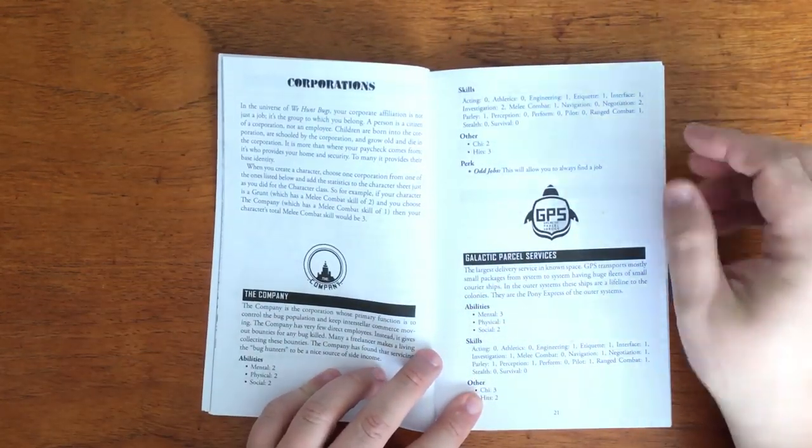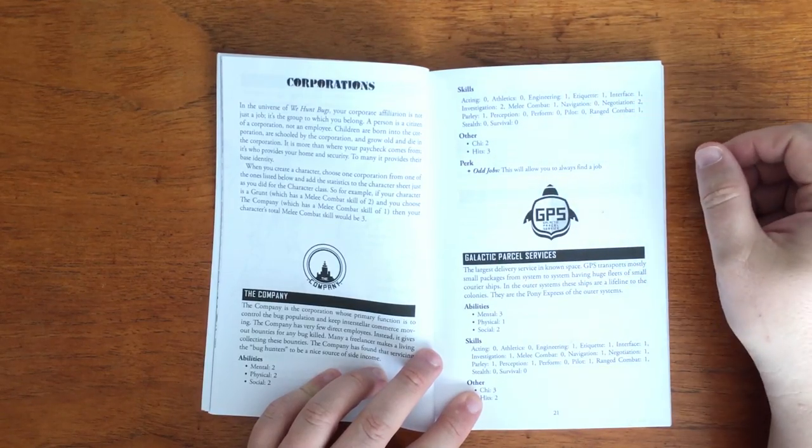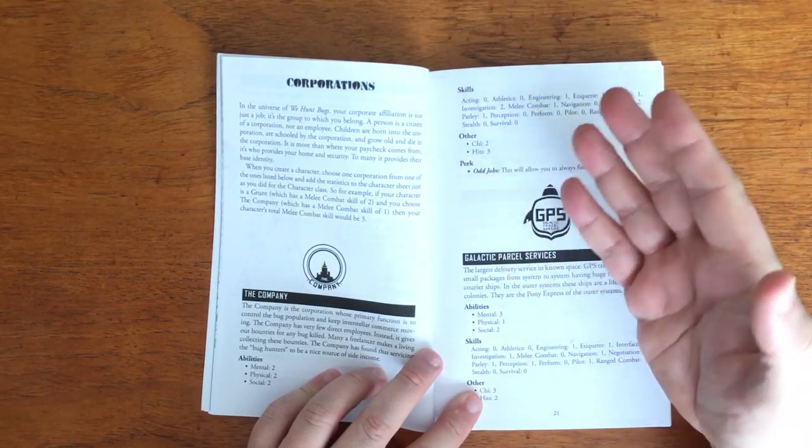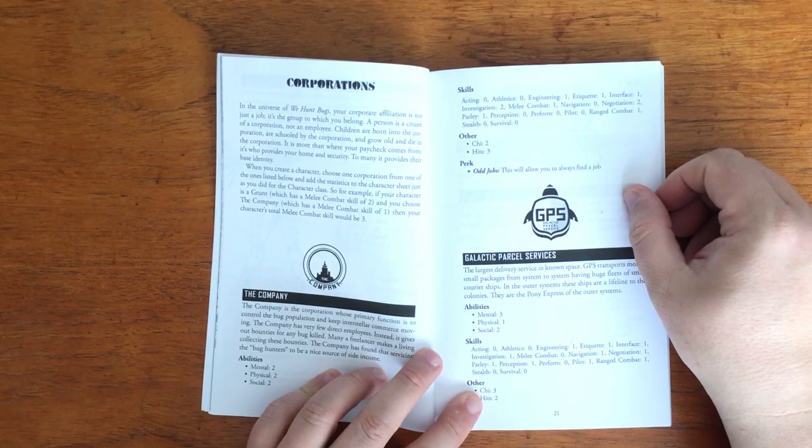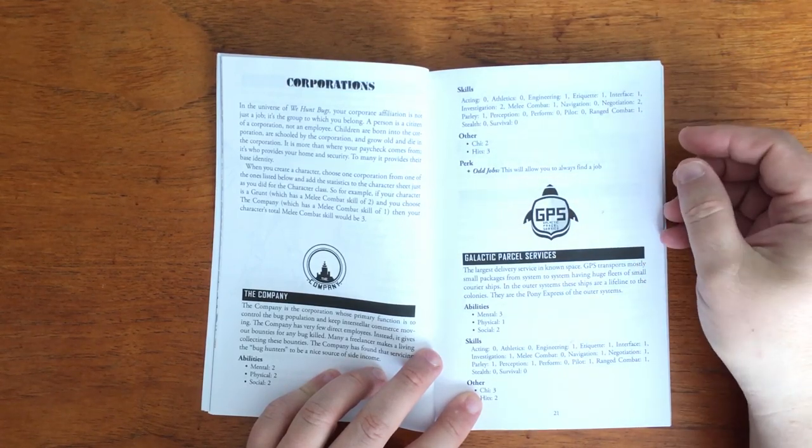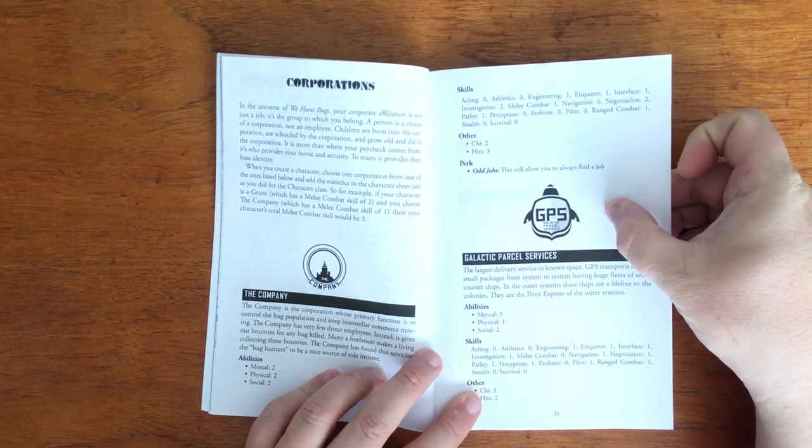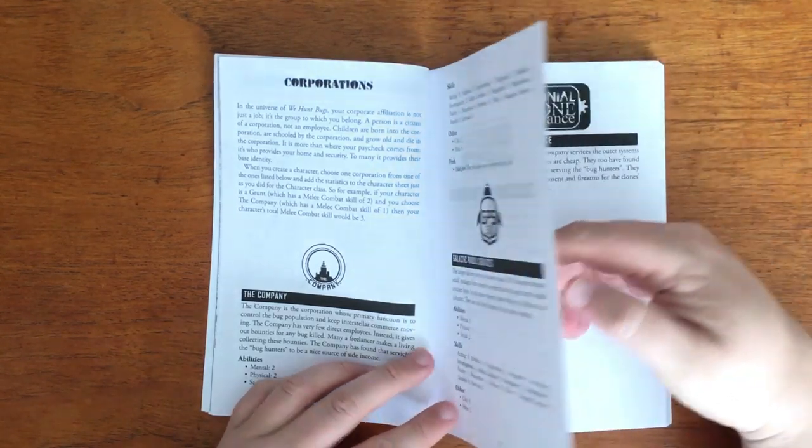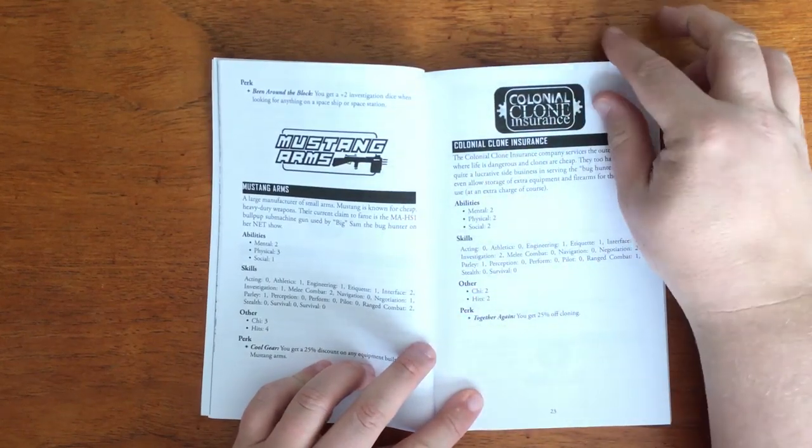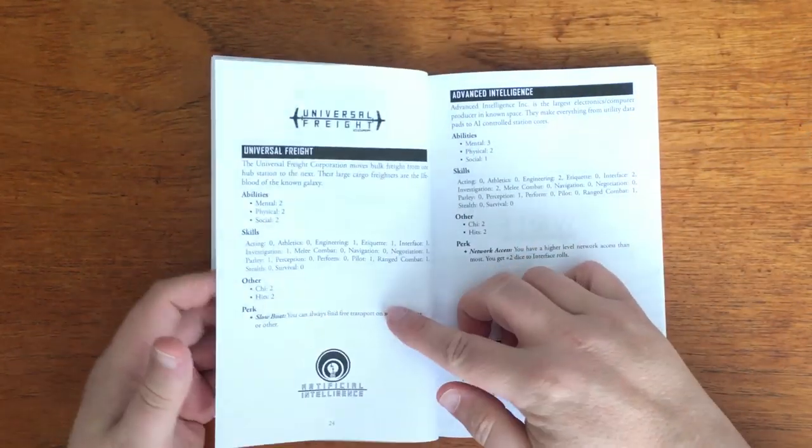It then moves on to the Corporations. These are the money and the power behind the Bug Hunters. People are born, grow up and die as citizens of Corporations. Each Corporation gives an addition to the abilities, skills and other of the base character, as well as a perk that is unique to that particular one. The Corporations themselves range from the Galactic Parcel Service to arms manufacturers or even entertainment companies and financial holdings.